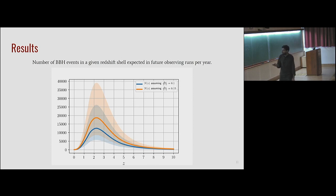This is just to show you that in every redshift bin using future detectors, this is number of events per year at every redshift. You will be measuring around, let's say, around redshift of one, you'll be measuring five thousand events per year.